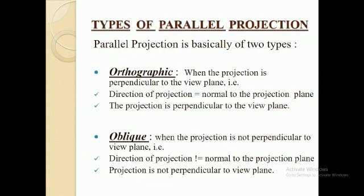Now, types of parallel projection. Parallel projection has two types: orthographic and oblique. When the projection is perpendicular to the view plane, we call it orthographic projection. The direction of projection is normal to the projection plane and the projection is perpendicular to the view plane.